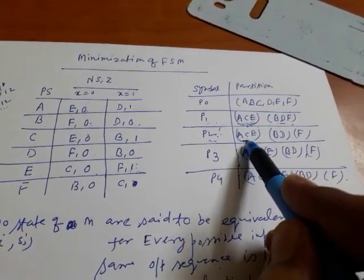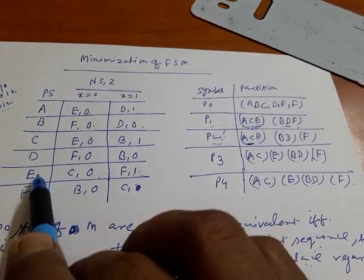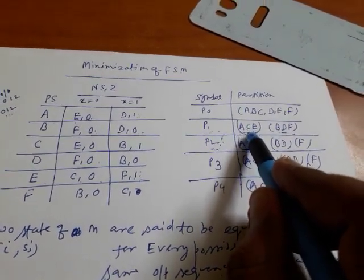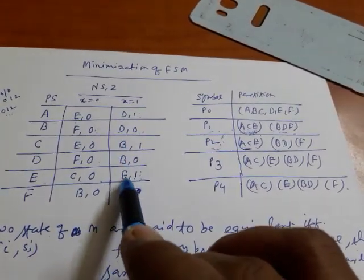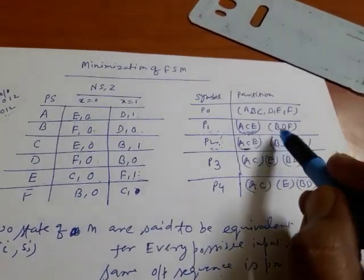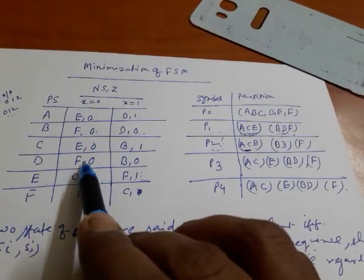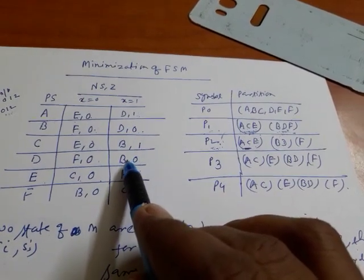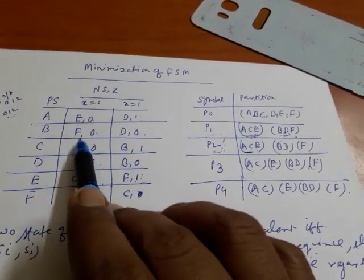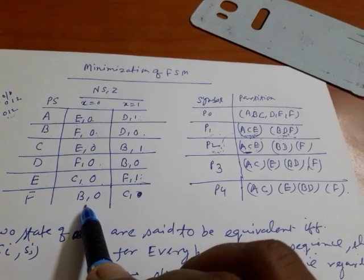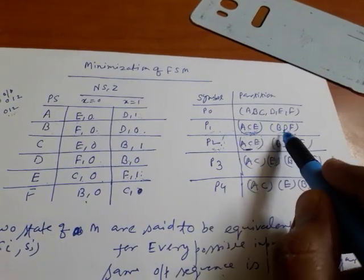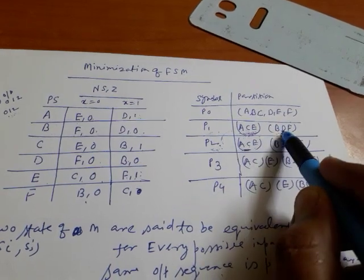Now check for a and e: E and C belong to the same set in P1, no problem. For input 1, D and F belong to the same set. Similarly for b and d: for input 0 output is same, for input 1 F is a single set — no problem. But for c and d: c belongs to one part and d belongs to a different part, so they are not equivalent and will form a separate state.